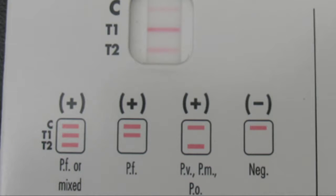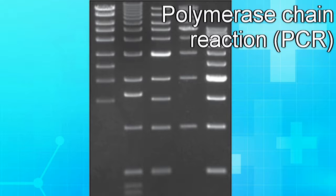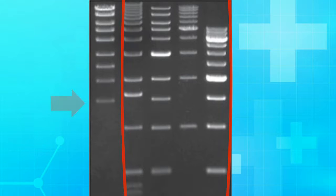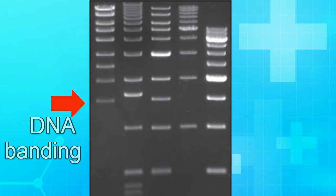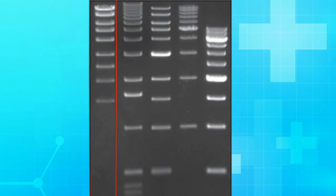Depending on the species, a certain number of bands will show up on the rapid diagnostic test. However, this test is limited in that it can only distinctively analyze the falciparum species, and may read negative if parasite concentration is low. The final test is the polymerase chain reaction (PCR). The goal of a PCR is to analyze the DNA of the Plasmodium — the DNA will separate by size, creating distinctive bands which can be compared to a known sample to form a definitive diagnosis.